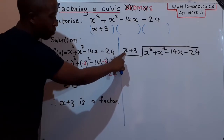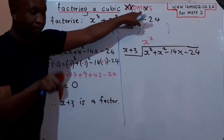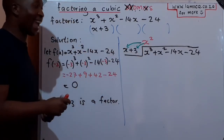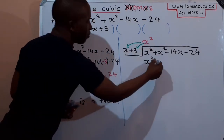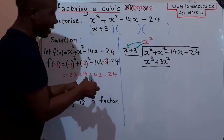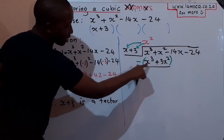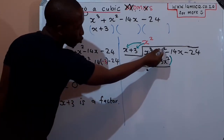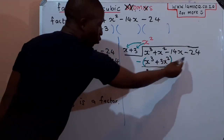Starting with division: x³ ÷ x = x², which I place at the top. Then multiply: x² × x = x³, and x² × 3 = 3x², giving x³ + 3x². Now subtract: x³ − x³ = 0, and x² − 3x² = −2x². The first subtraction always gives zero when the division is correct.